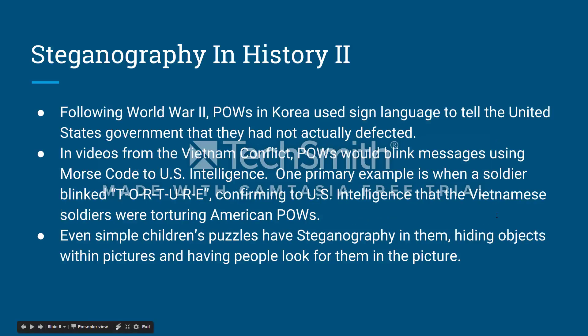In more modern times, soldiers have used sign languages or Morse code to communicate with the United States. In the Korean War, prisoners of war would discreetly flip off the camera in pictures to show that they hadn't defected. While in Vietnam, prisoners in staged videos would blink messages in Morse code. One such message spelled out T-O-R-T-U-R-E, confirming to the U.S. that the Vietnamese were torturing POWs.